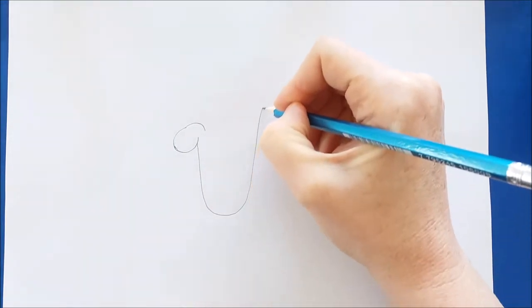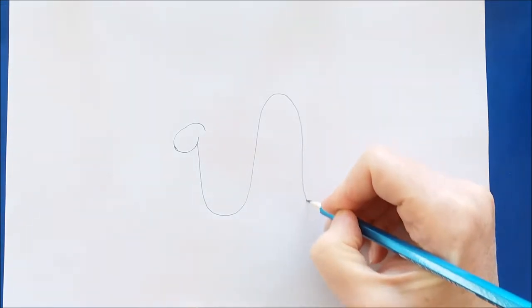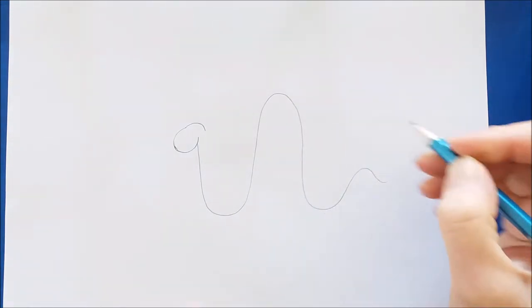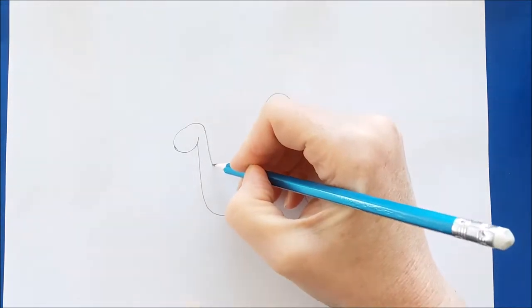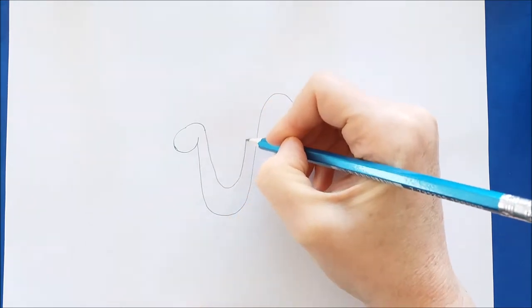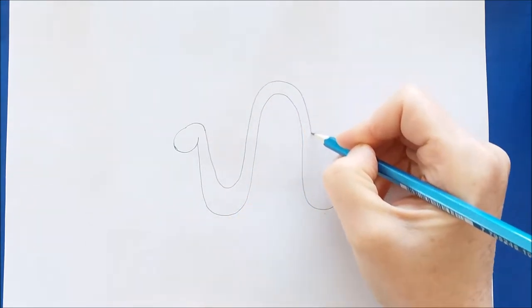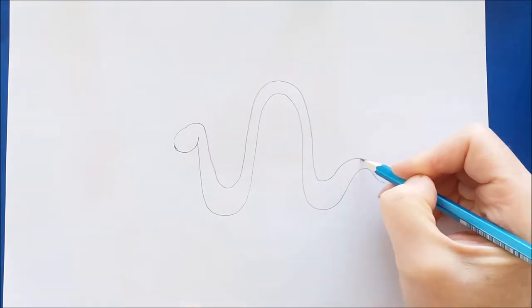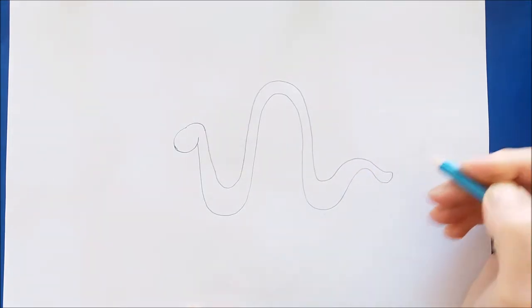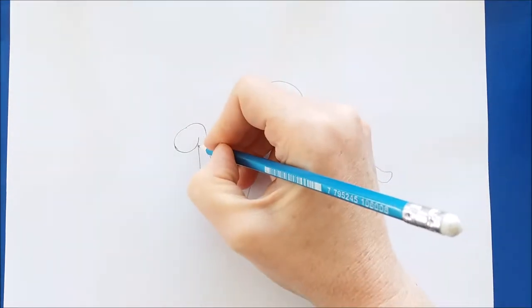And then I'm going to draw in the worm shape, which is a curving line, kind of like a roller coaster. And I'll do the same thing with this line. And the curves will get smaller the closer we get to the inchworm's tail.